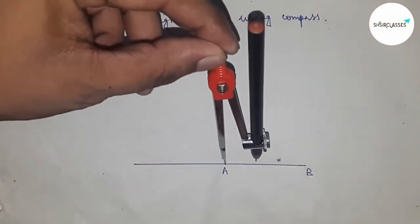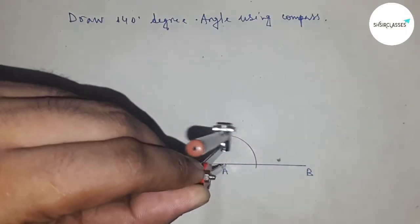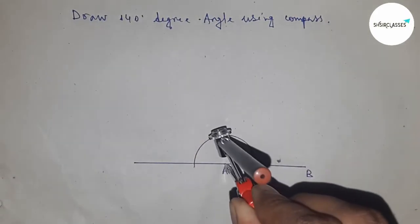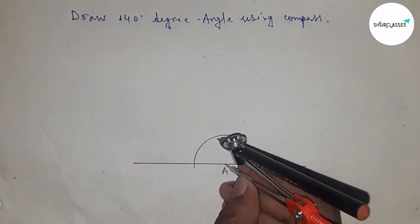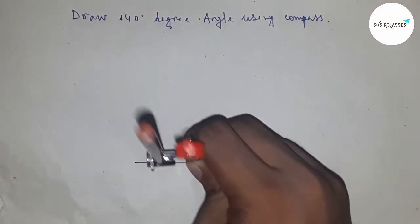So putting the compass here and taking any length and drawing a semicircle on point A. Next, with the same length, putting the compass here and cut the arc line by this way.